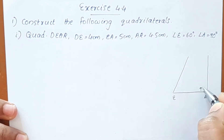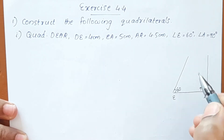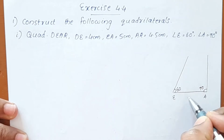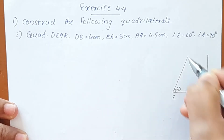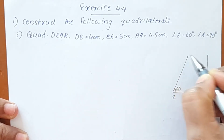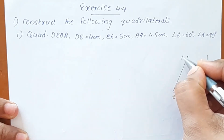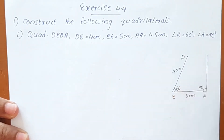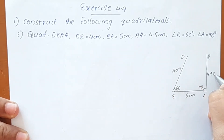This is 90 degrees, E is 60 degrees. This is 5 cm. The angle is 4.5 cm.